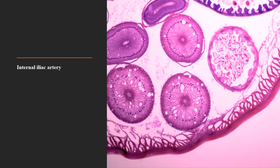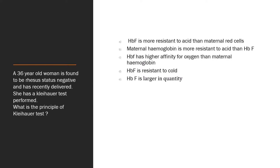And the answer is internal iliac artery. Fourth question: A 36-year-old woman is found to be rhesus negative and has recently delivered. She has a Kleihauer test performed. What is the principle of the Kleihauer test? Is it: HbF is more resistant to acid than maternal red cells? Maternal haemoglobin is more resistant to acid than haemoglobin F? Haemoglobin F has higher affinity to oxygen than maternal haemoglobin? Haemoglobin F is resistant to cold? Or haemoglobin F is larger in quantity?